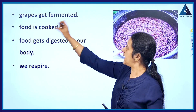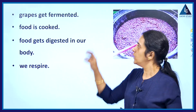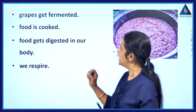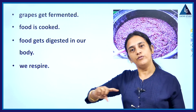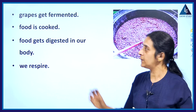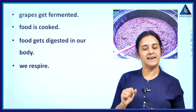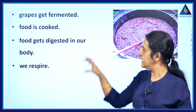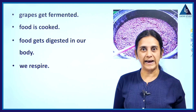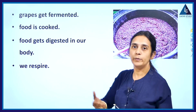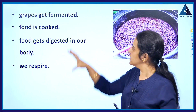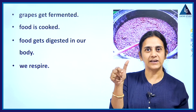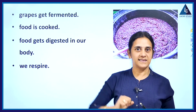More examples: grapes get fermented, meaning they get spoiled. When cooked food is left out, it also gets spoiled. Food gets digested in our body — the digestion process is a chemical reaction. And we respire. All these are examples where a chemical reaction is happening within the system.